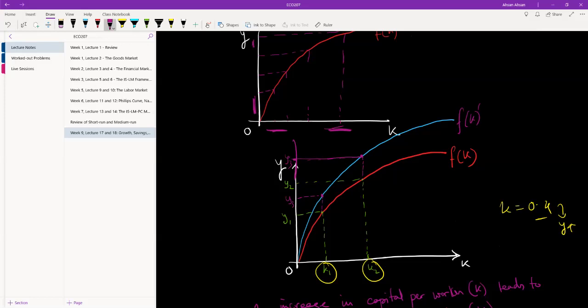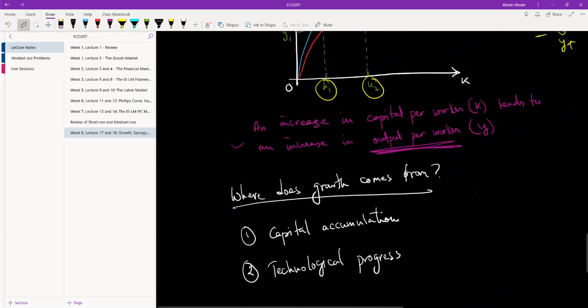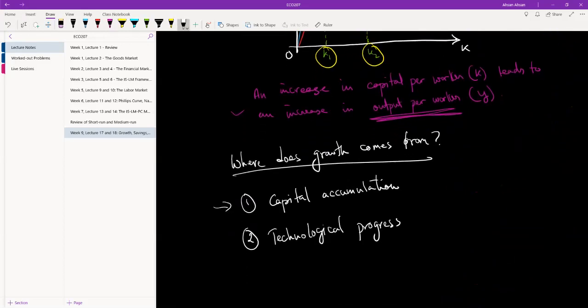And so this is also growth, right? At the same level of capital, nothing has happened to capital per worker, but because there has been technological progress, a technological breakthrough, what we are doing now is producing more. Our output per worker has gone up. So these are the two ways in which we get growth: either by accumulating more capital or through technological progress.